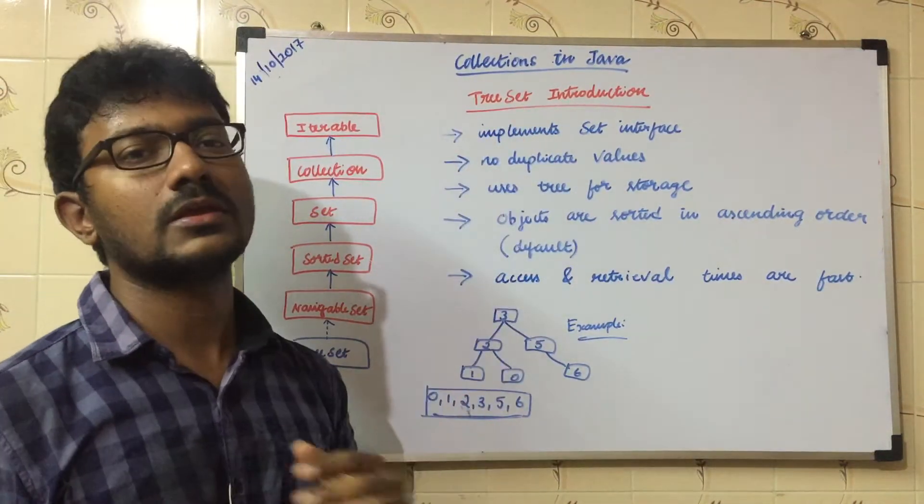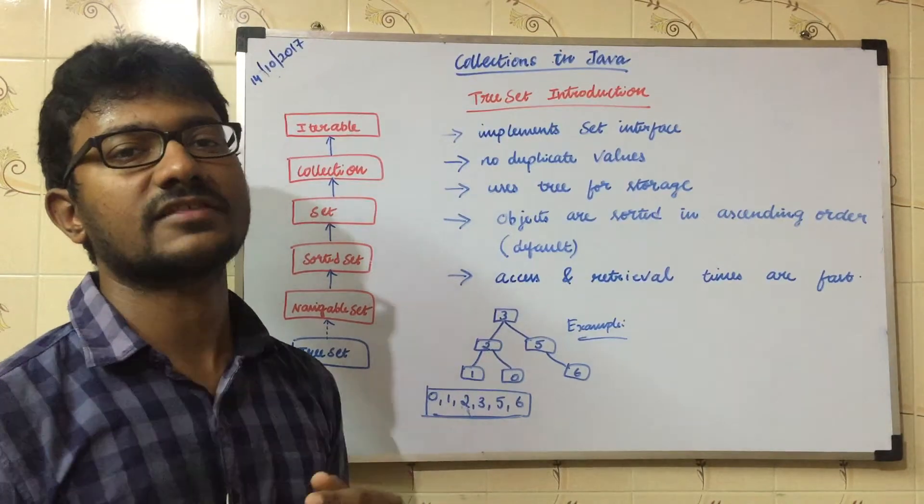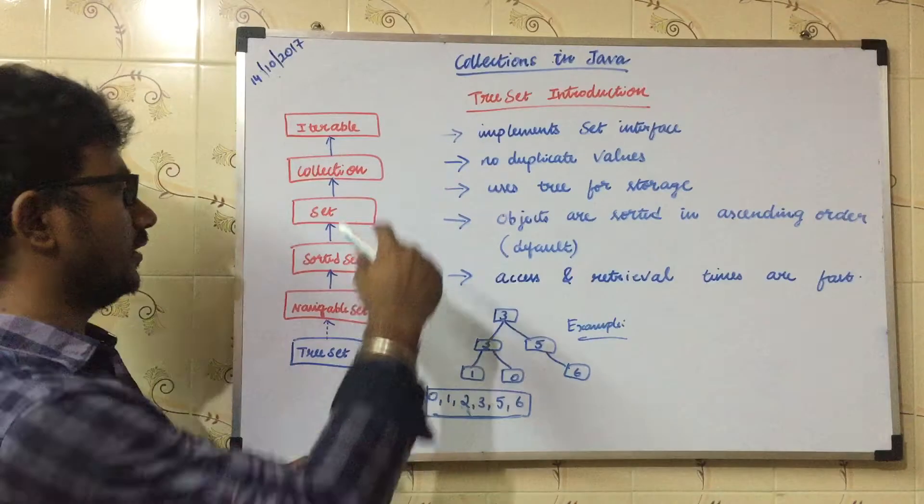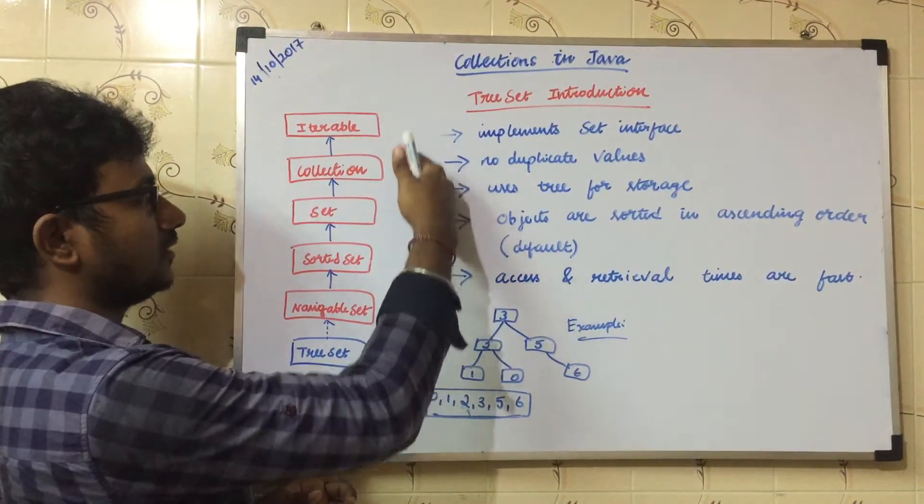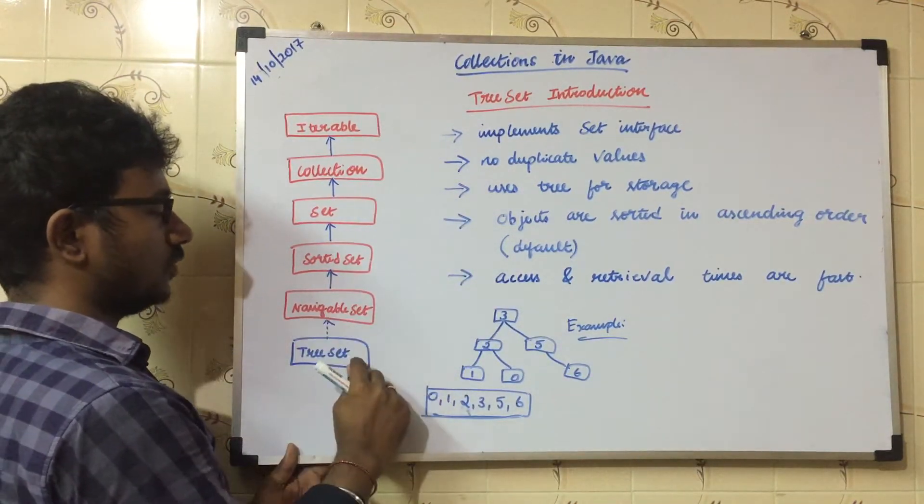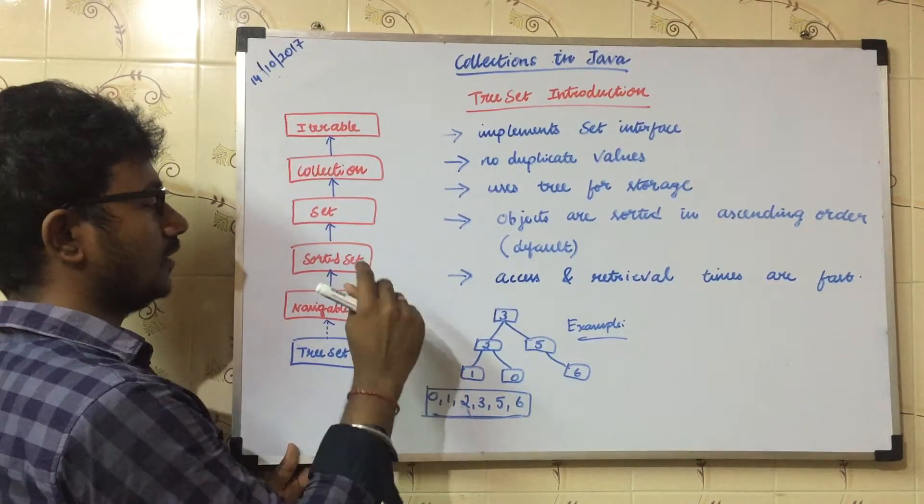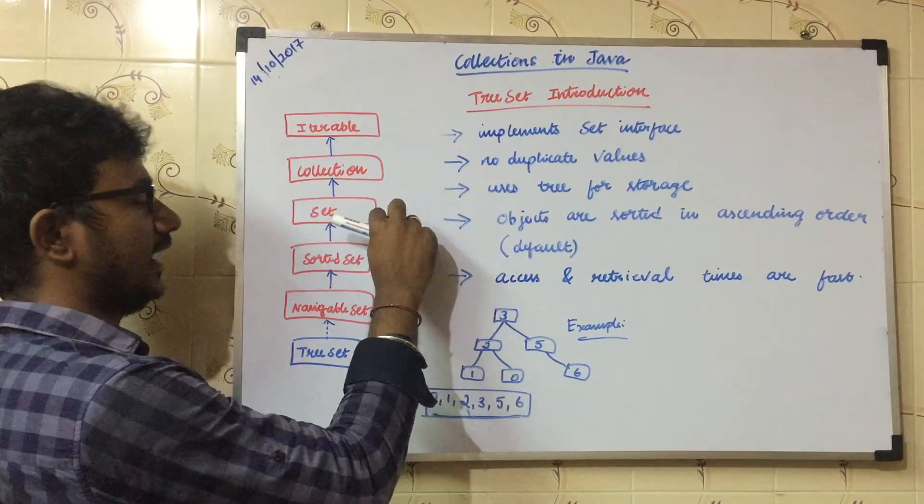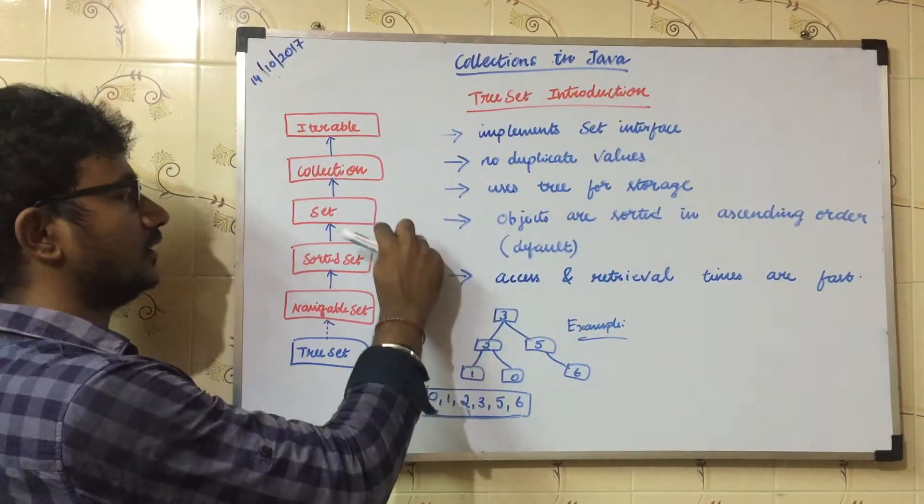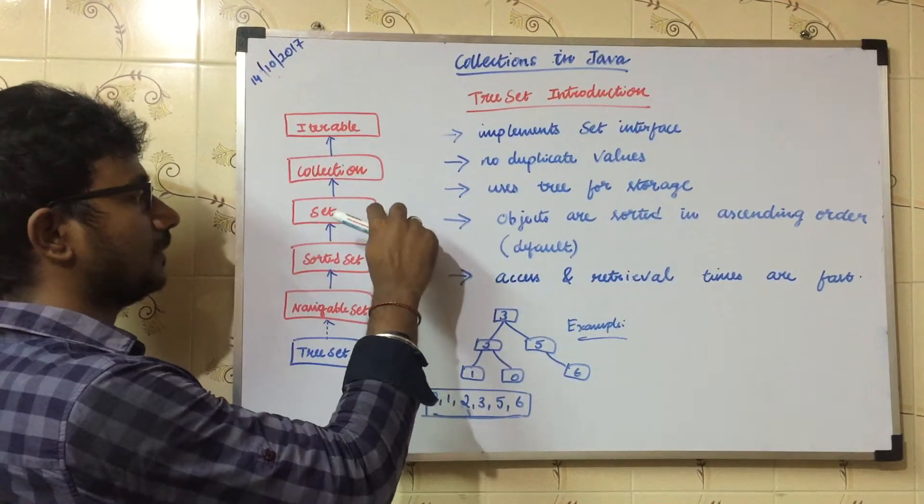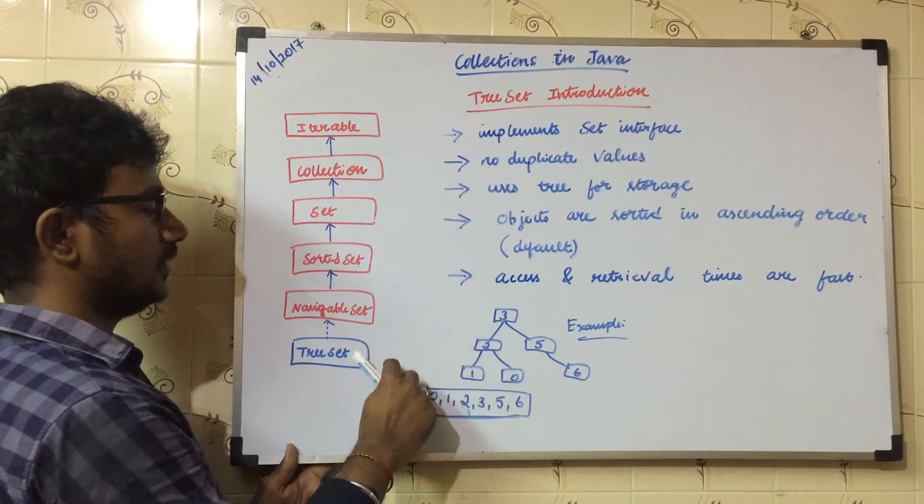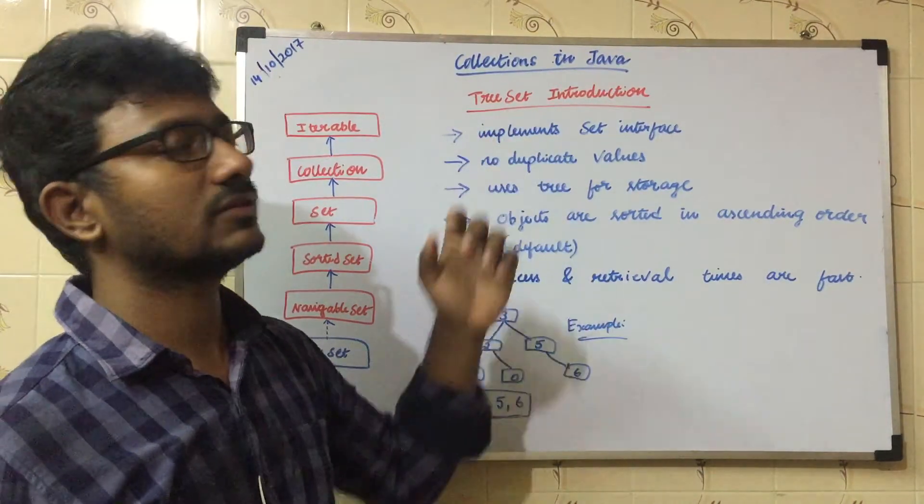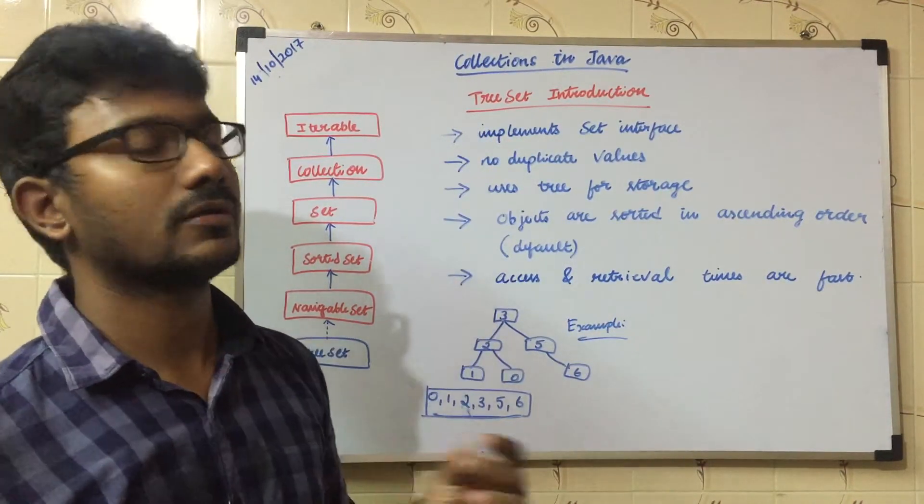TreeSet is one of the main implemented classes of Set interface. It implements the Set interface in an indirect manner. We will see this in the class interface hierarchy diagram. TreeSet implements NavigableSet, but NavigableSet extends SortedSet, and SortedSet extends Set interface. So indirectly, TreeSet implements Set interface. The methods that are present in the Set interface would be implemented in TreeSet also. That's why TreeSet is the implemented class of Set interface.